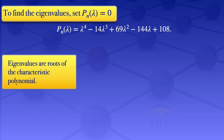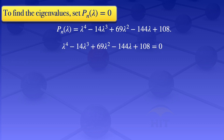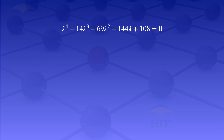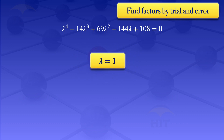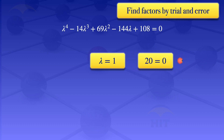Setting P(λ) = 0 gives us λ⁴ - 14λ³ + 69λ² - 144λ + 108 = 0. We try to find factors by trial and error, starting with λ = 1. Substituting λ = 1 gives 1 - 14 + 69 - 144 + 108 = 20, which is not equal to 0, so (λ - 1) is not a factor.